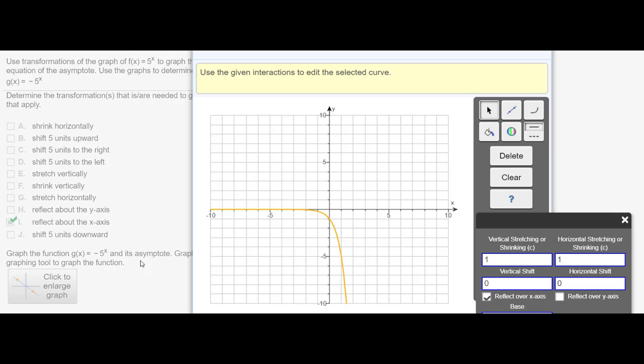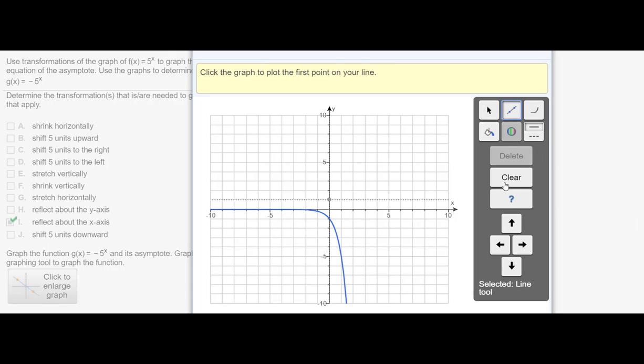And then finally, it also says to graph the asymptote as well. This was probably the most confusing part. So click the line tool, and then click one point and one point, because the horizontal asymptote, as we can see, this function never touches the x-axis.